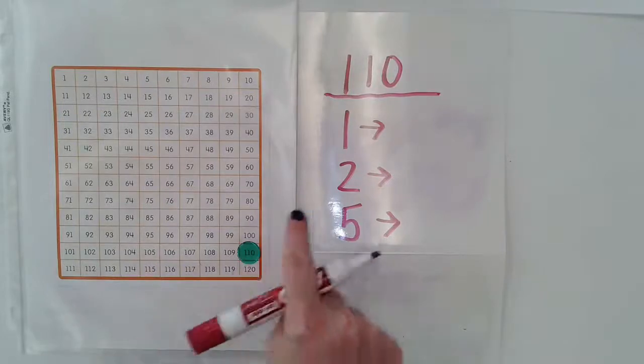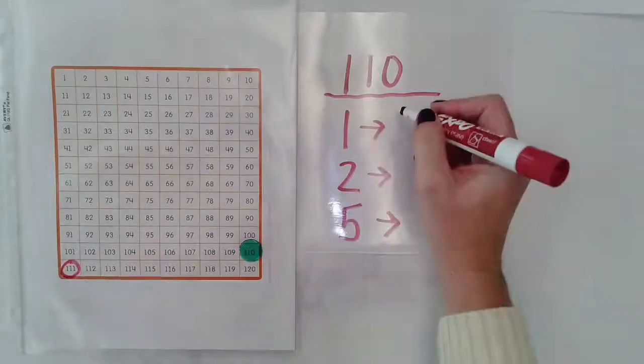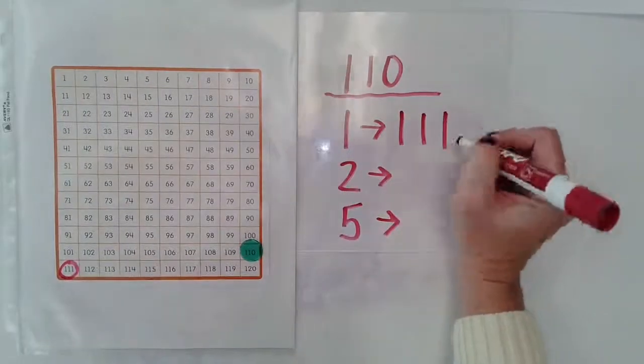So at 110, if I want to go up one more, I need to go to the next row, which would be 111.